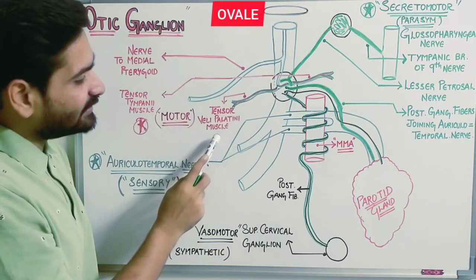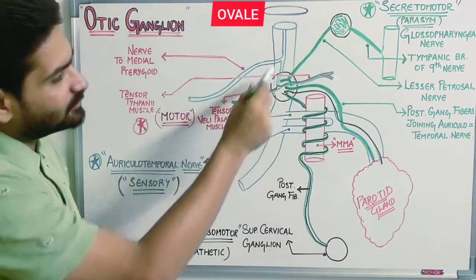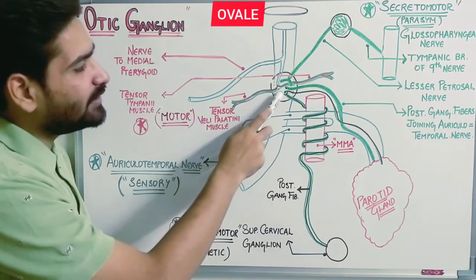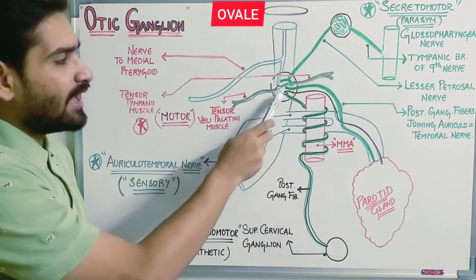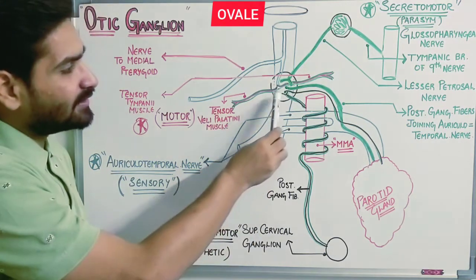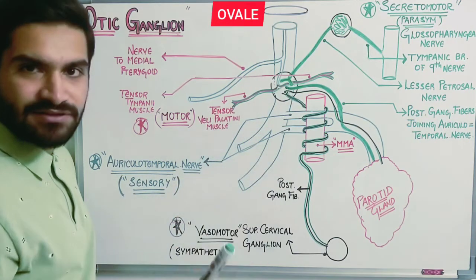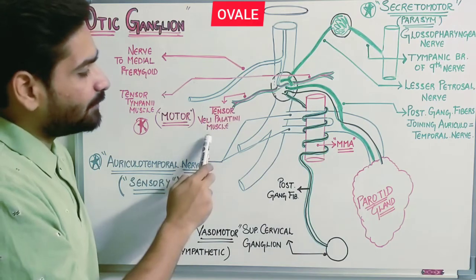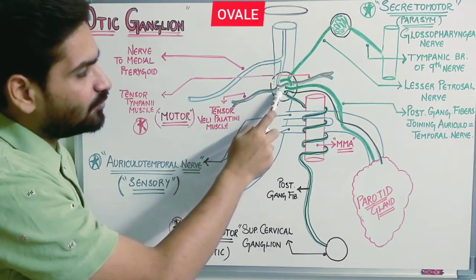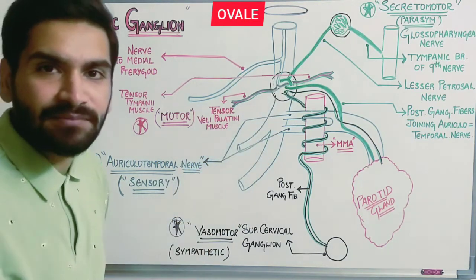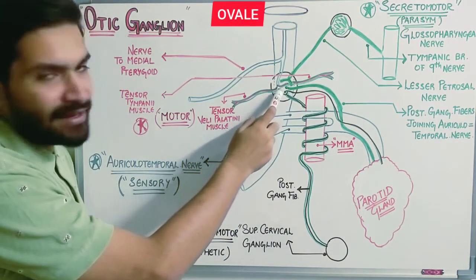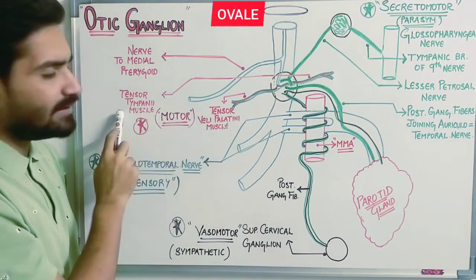The nerve to medial pterygoid also supplies tensor veli palatini and tensor tympani muscles. These branches will relay in the otic ganglion. Every nerve which is going to supply further to the parotid gland or other muscles must first ask permission of this ganglion — meaning it relays in the otic ganglion and then transfers its connections to tensor veli palatini and tensor tympani muscle.